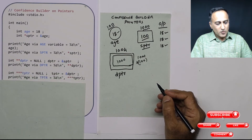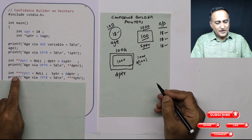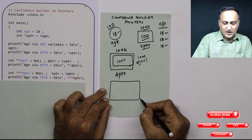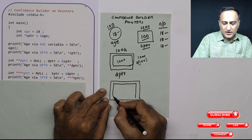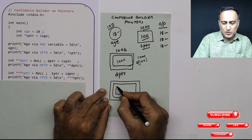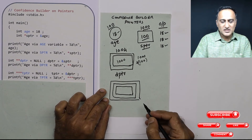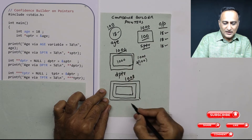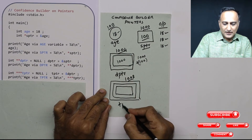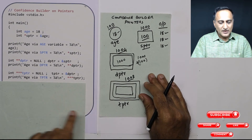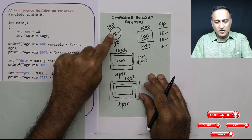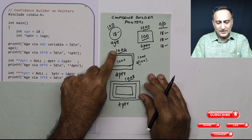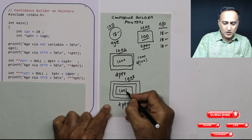Now let's play around with the triple star. We have triple star tptr. Just to make it clear that it's a triple star, I am going to draw three boxes so that we don't get confused. This way of representation is going to help you understand your concepts much better. Let's say this fellow is at address 1008. Since it's a triple pointer, tptr cannot contain sptr or the address of age — it can only contain the address of the double pointer. The address of the double pointer is 1004, so tptr contains 1004.